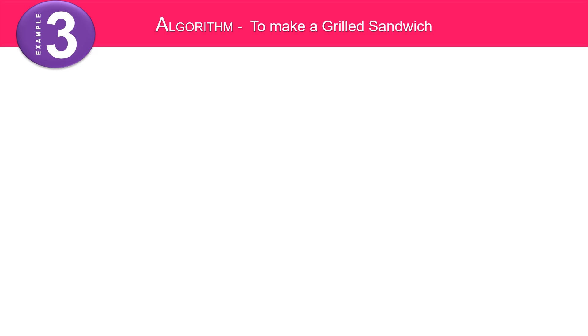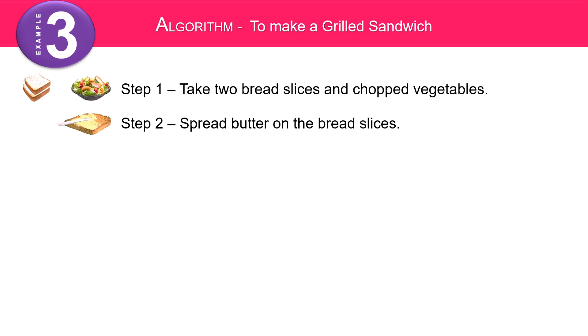Algorithm to make a grilled sandwich. Let's begin. Step 1: take two bread slices and chopped vegetables. Step 2: spread butter on the bread slices. Step 3: keep the chopped vegetables between the slices.